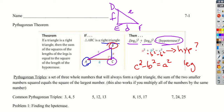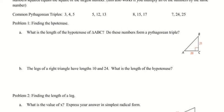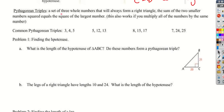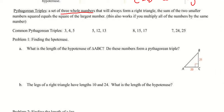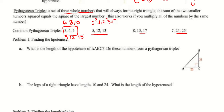Pythagorean triples are sets of three whole numbers that always work in the Pythagorean theorem — they're always the sides of a right triangle. Examples include 3-4-5, 5-12-13, 8-15-17, and 7-24-25. You can also double or triple these: 6-8-10 works because 36 plus 64 equals 100. When writing your statement, just show that 5 squared plus 12 squared equals 13 squared.